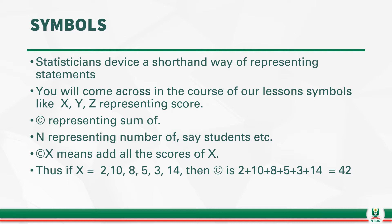We use symbols like N to represent number of students in the class or number of teachers in a particular zone. Now, if you have a set of numbers for X, like X is equal to 2, 10, 5, 8, 3, 14, and you want to say the sum of X is ©, a C with a circle, the sum of X or sigma X. Sigma X will mean 2 plus 10 plus 8 plus 5 plus 3 plus 14. That is all the numbers in the set of scores which are represented by X. The total is 42.